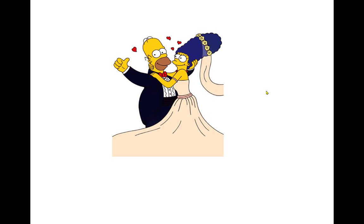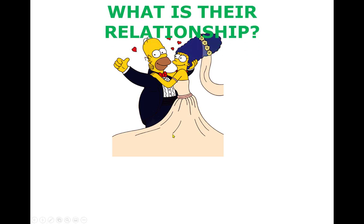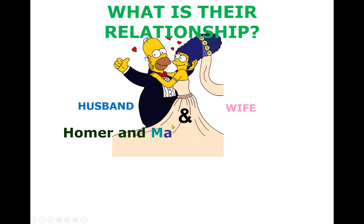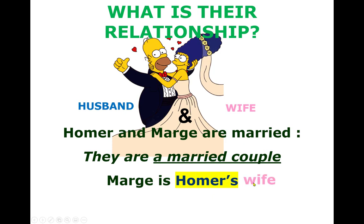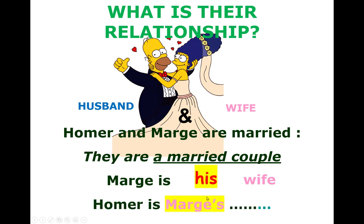They are Selma and Patty, and their first names are Patty and Selma. You can see Homer and Marge — what is their relationship? They are husband and wife, that is, they are married. Marge is Homer's wife — she is his wife. And Homer is Marge's husband — he is her husband.